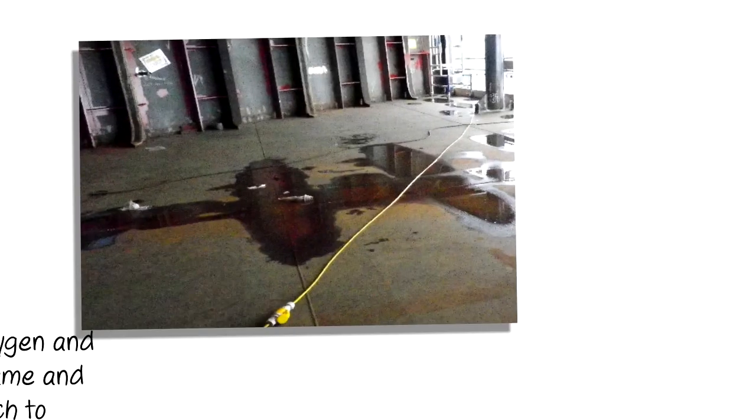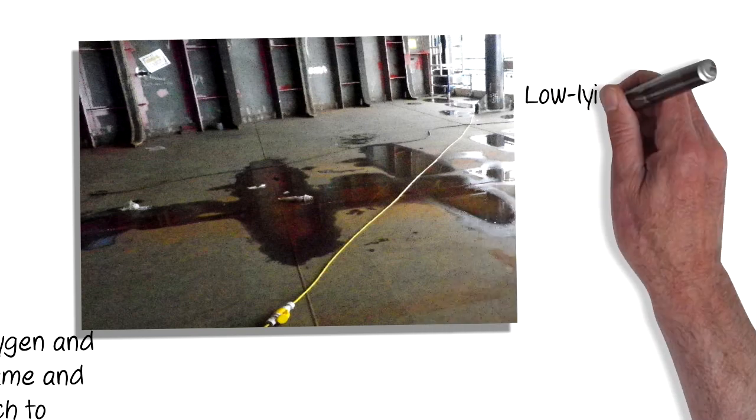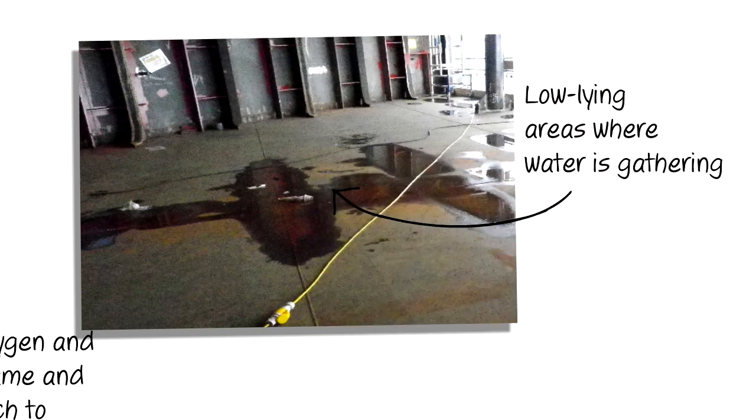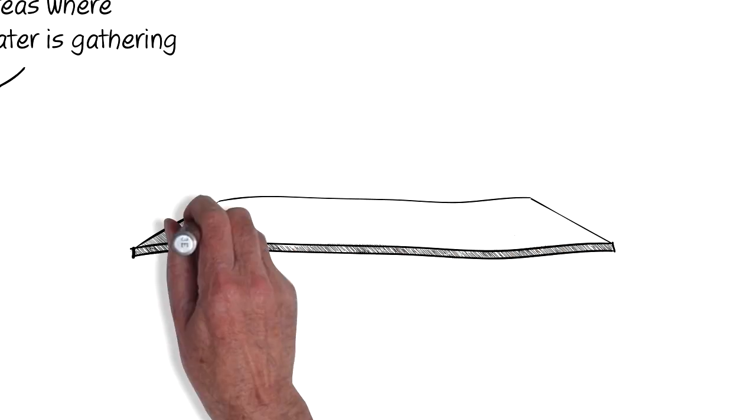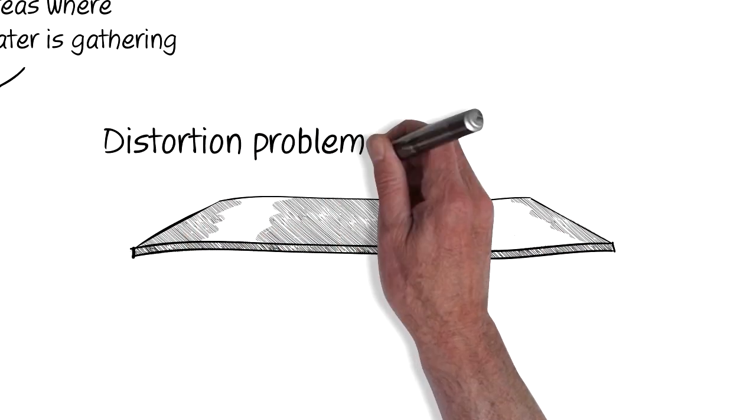This deck is a good example of when distortion has occurred after welding. You can clearly see that the deck itself is distorted in the low-lying areas where water has gathered. This inevitably causes problems as we need to ensure that uniformity in tolerances is maintained.